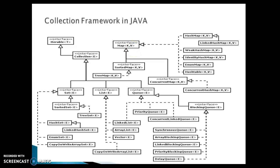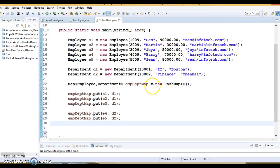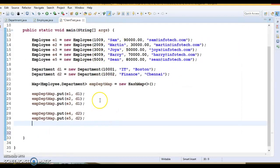To obtain a collection view of keys, the keySet method can be used. Map also contains a keySet method which will extract all keys from the map and return them to you. Before exploring how HashMap works internally, we'll first see how we can add elements in a map. A map is a data structure which holds key-value pairs.